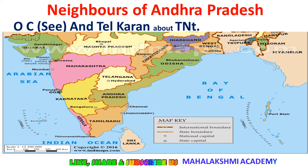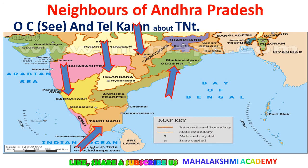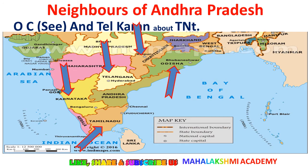Now let's move to the map. Near Maharashtra you can see Telangana in yellow. Odisha is there, then Chhattisgarh — all these are neighbors of Andhra Pradesh. Telangana is also a neighbor, then Karnataka, then Tamil Nadu, and one more is the Bay of Bengal on its coastal area. These are the neighbors of Andhra Pradesh.